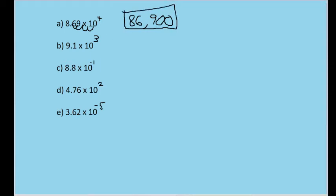A similar process can be used for 9.1 times 10 to the 3rd power. We move the decimal three spaces to the right to get 9,100.